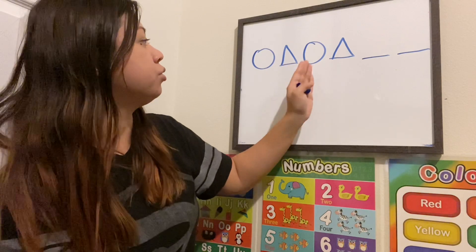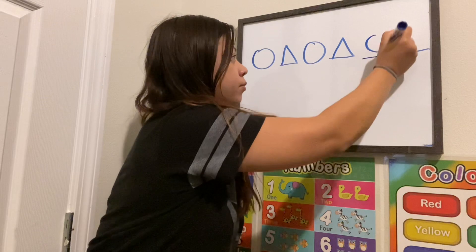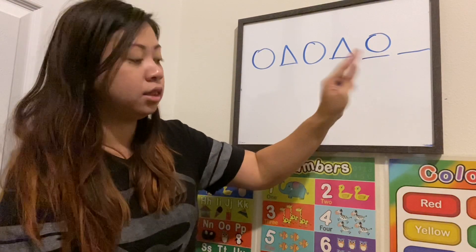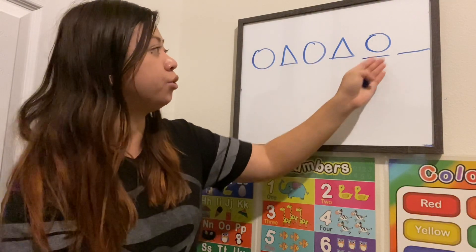Circle, triangle, circle, triangle, circle. And then let's do it again so we can find out what is next: circle, triangle, circle, triangle, circle, triangle.